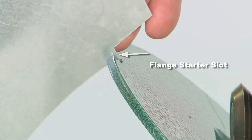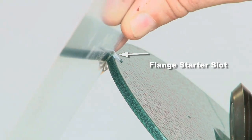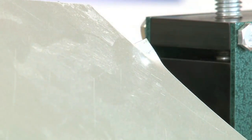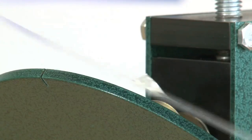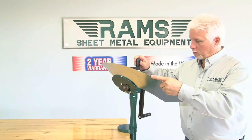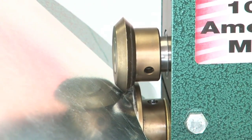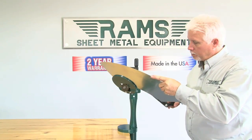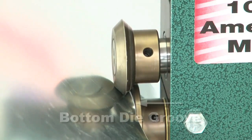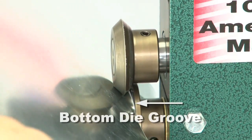Place material in the slot on the top side to create starter flange. Crank the handle all the way down until it stops and rotate the handle while using the groove on the bottom die as a gauge for a uniform flange.